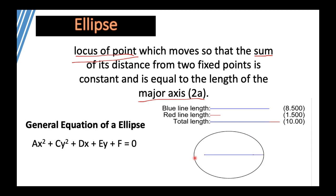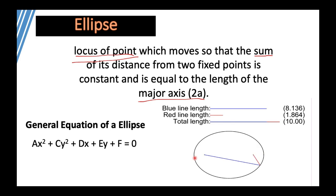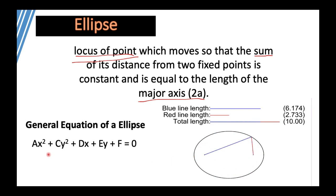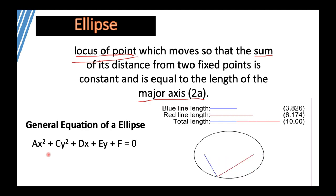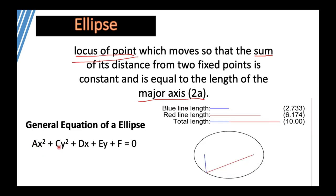Remember, the circle came from the ellipse — the circle is a special case of the ellipse. The general equation of an ellipse is ax² + cy² + dx + ey + f = 0. Note that both a and c are positive.